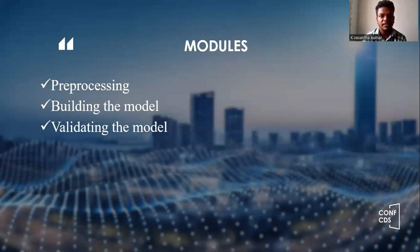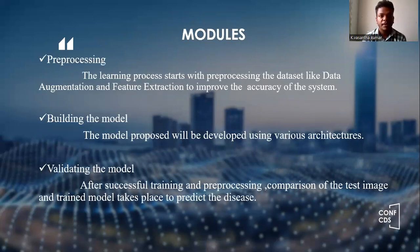Modules. We are using three modules for this: pre-processing, building the model, and validating the model. Pre-processing: the learning process starts with pre-processing the data, such as data augmentation and feature extraction, to improve the accuracy of the system.